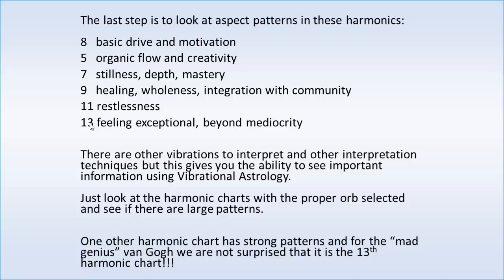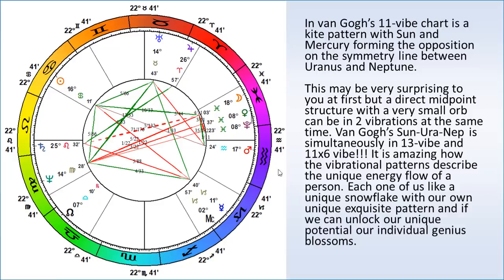The last step in the interpretation is we look at the 8th harmonic chart — and the 5th, 7th, 9th, 11th, and 13th. We've already looked at the 13th for Van Gogh because when we looked at the midpoint structures it told us that 13 would be important. But we also want to look at 8, 5, 7, 9, and 11. Here's Van Gogh's 11-vibration chart. Do you remember what I said about 11? Eleven is unstable. We think of Van Gogh as not only trying to be transcendent but also unstable. Sure enough, as we expect, there's a huge planetary pattern in the 11-vibration.